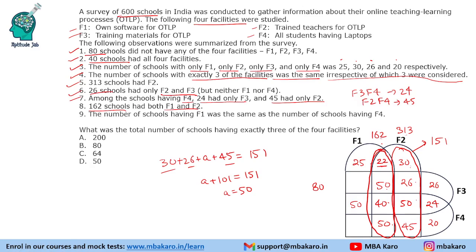We have now filled in this information, and only two values remain — let's call them A and B. The last condition says: the number of schools having F1 was the same as the number of schools having F4, i.e., F1 total = F4 total.